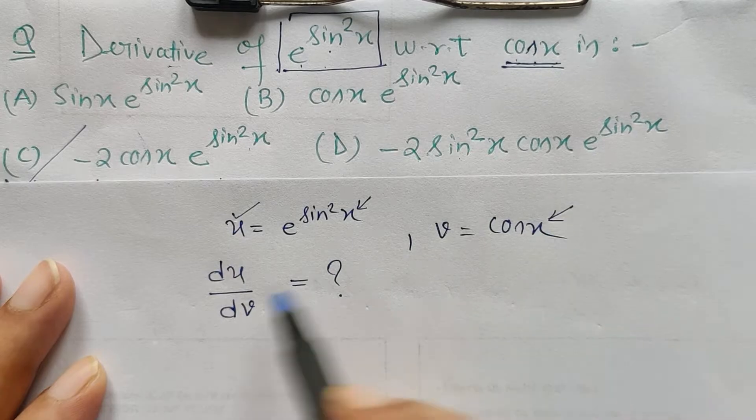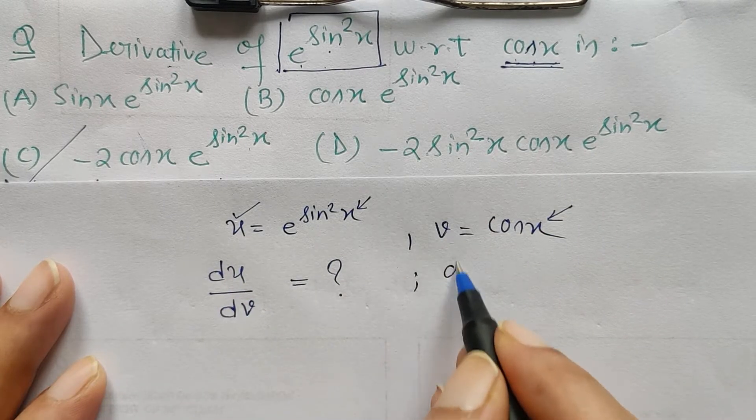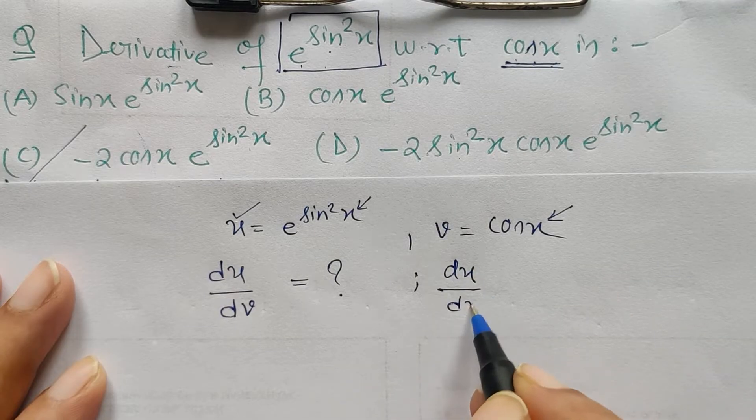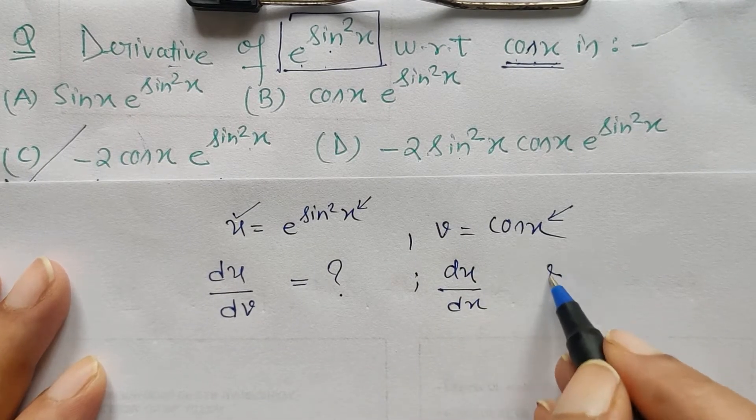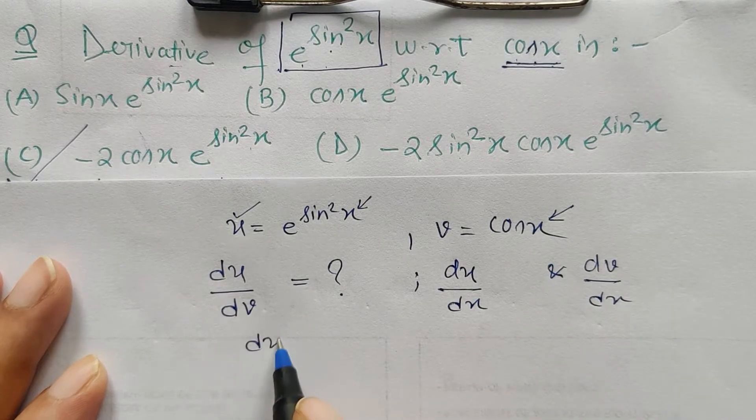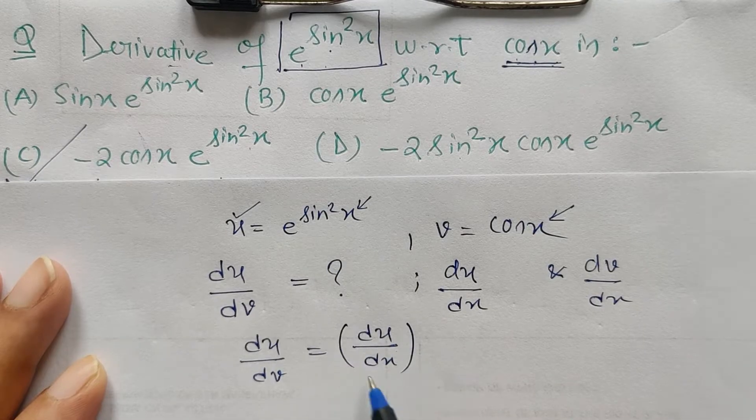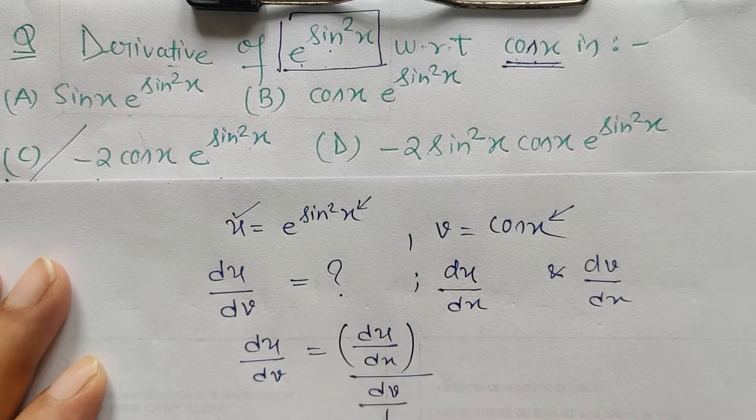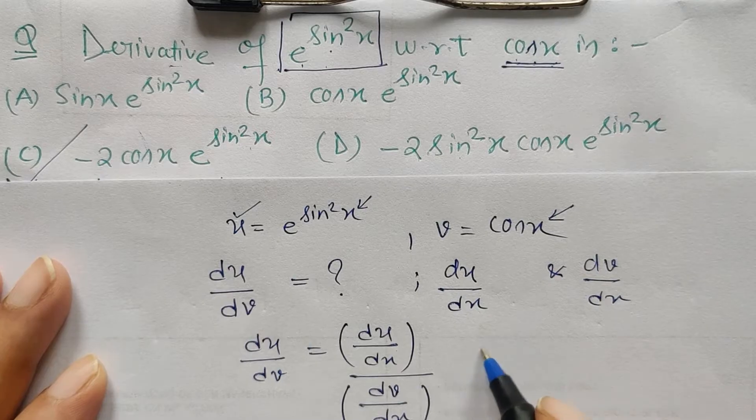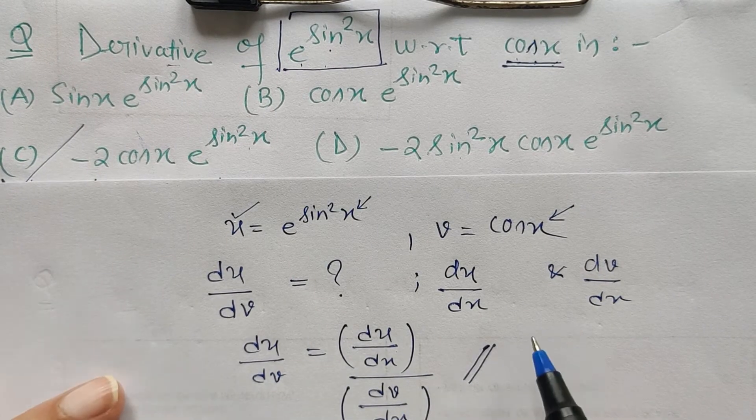Because du by dv is nothing but du upon dx and dv upon dx. And see, it is given that du by dv is du by dx upon dv by dx. So in this fashion also, taking this as the algorithm or the basic foundation, we can also differentiate this with respect to this.